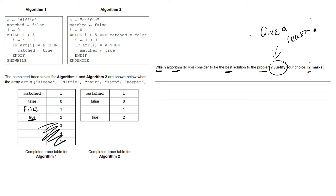Moving to algorithm two, the loop is different. It says while i is less than five and matched is false — so while that condition is true, run the line of code. As soon as matched becomes true the loop breaks. We can see this: true is set, so the whole condition becomes false and it comes out of the loop. We haven't got that wasted time of looking at the other three items in the array.